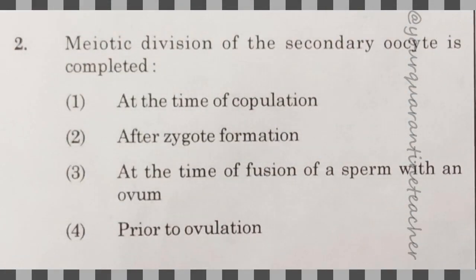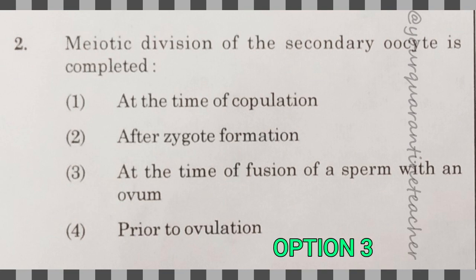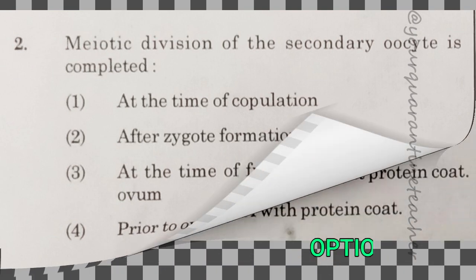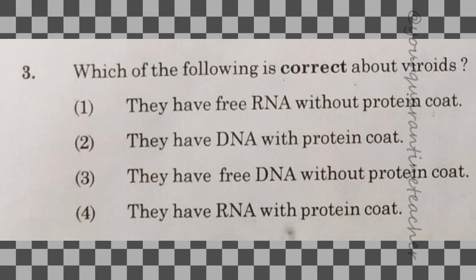Next question: meiotic division of the secondary oocyte is completed. I have already covered the secondary oocyte in class. Meiosis 2 is complete at the time of fusion of sperm with an ovum. The answer is option 3.